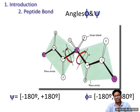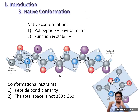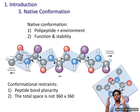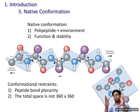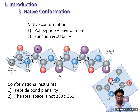So side chains determine the orientation between two planes. Different orientations produce different conformations. When you have about six, seven, or eight amino acids linked, it's called a peptide; when it's a large one, it's called a protein.